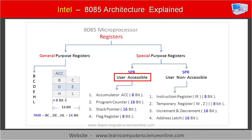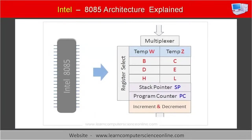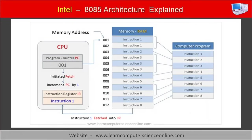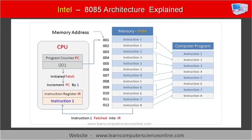Let us now look at some important registers and their functions. The first register is the program counter register, PC. The program counter is a 16-bit special purpose register used in the 8085 architecture to store the address of the instruction that needs to be fetched from memory. It always stores the memory address of the next instruction to be fetched from main memory, RAM.